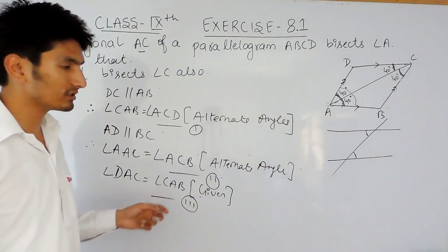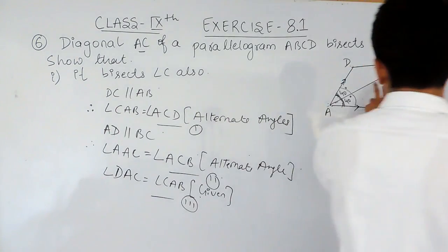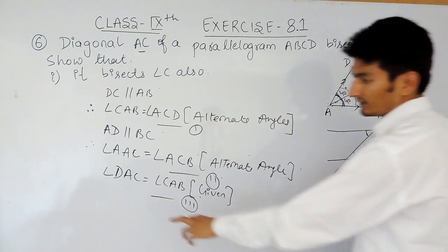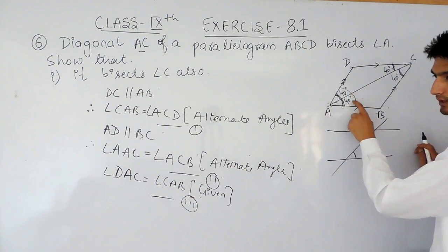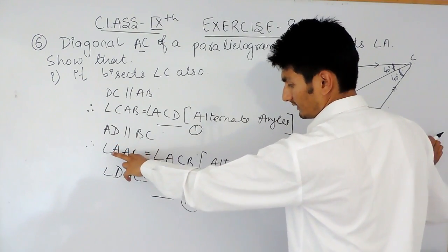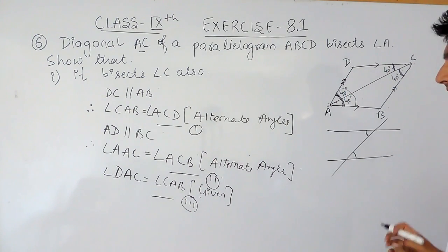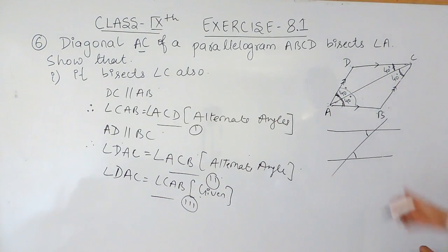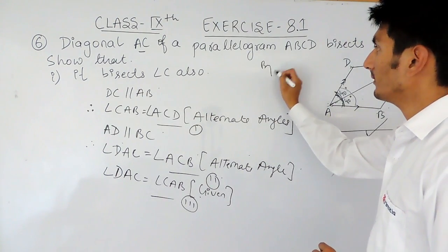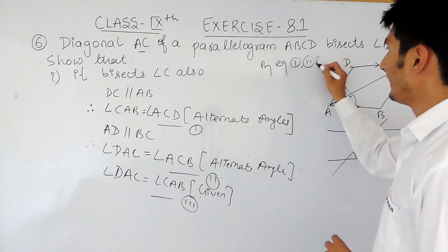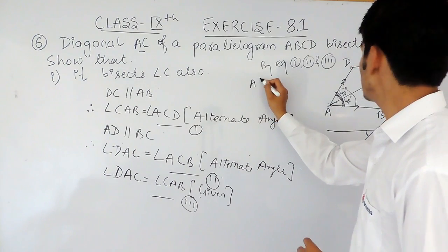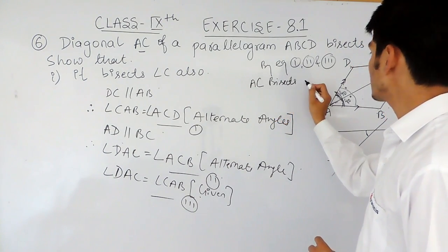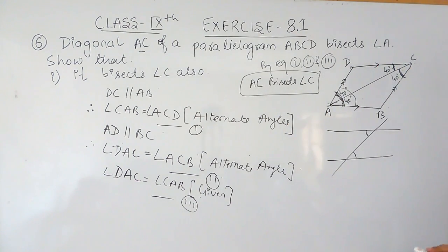Combining all three equations, we can confirm that this diagonal also bisects angle C. From equation one, angle CAB equals angle ACD. From equation two, angle DAC equals angle ACB. From equation three, angle DAC equals angle CAB. By all three equations combined, we can confirm that AC bisects angle C.